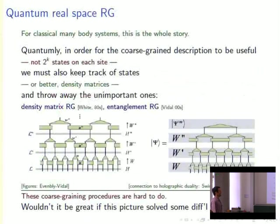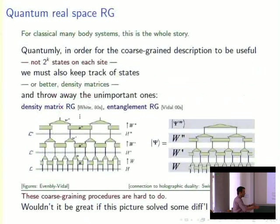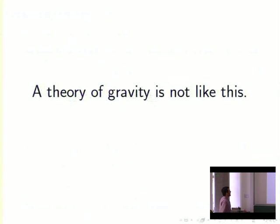In the quantum mechanical case, this coarse-graining procedure is hard to do in practice. It would be really great if the pictures I'm drawing solve some differential equation — then we wouldn't have to actually go into the system and think about what it's doing. That's a hope to keep in mind. So that was the first fact: the renormalization group is a good idea; the evolution is local in scale.